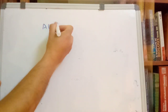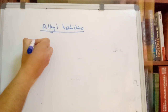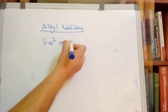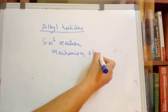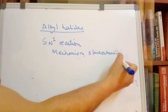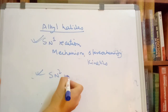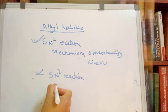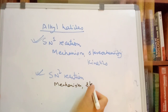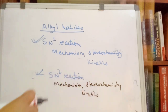We are going to use Alkyl Halides. We are going to cover the SN1 reaction and the SN2 reaction — including mechanism, stereochemistry, and kinetics for both SN1 and SN2 reactions from the Alkyl Halides chapter.